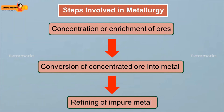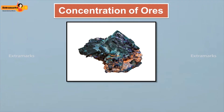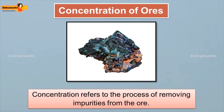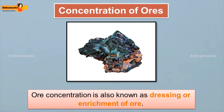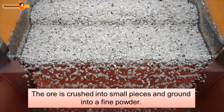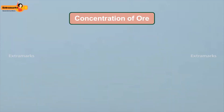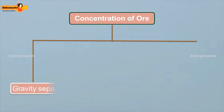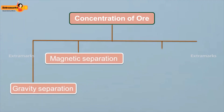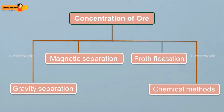The first step is the concentration of the ore. Concentration refers to the process of removing impurities from the ore. Ore concentration is also known as dressing or enrichment of ore. The ore is crushed into small pieces and ground into a fine powder. Impurities of the ground ore are then separated using physical methods such as gravity separation, magnetic separation, froth flotation, or chemical methods.